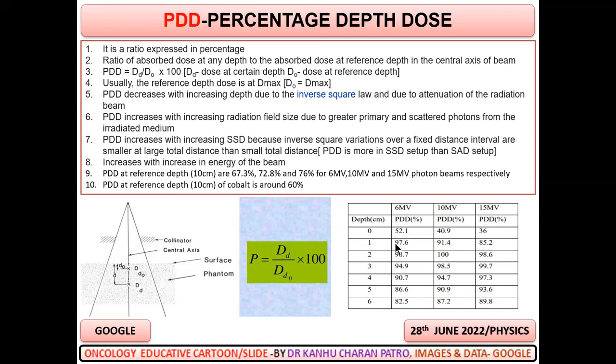At D max, PDD increases but slowly along the depth. Beyond D max, as depth increases, it decreases with depth.